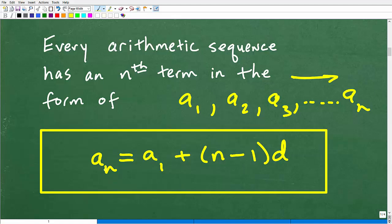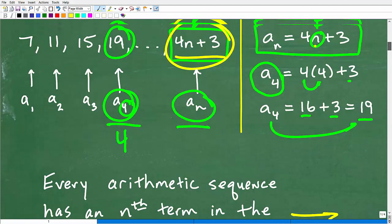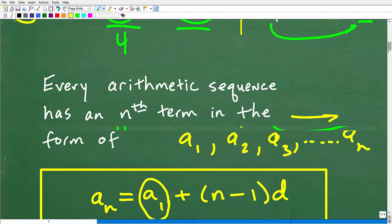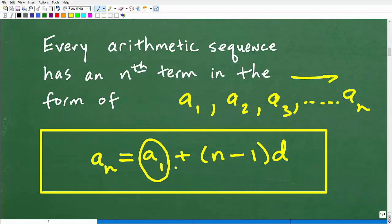So a sub n, okay, this is our formula, is equal to a sub 1. a sub 1 is the first term in the sequence. Now, we do have that information in this particular sequence, right? The first term is 7. So that's a sub 1. So it's going to be a sub 1 plus parenthesis n minus 1. We don't mess with the n. And then d is the common difference.